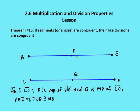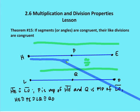So if I know that HE is congruent to LO, then I know that if I take half of HE and half of LO, that those halves are also going to be congruent. So I can say now that HP would be congruent to LQ. So again, HP, which is half of HE, congruent to LQ.